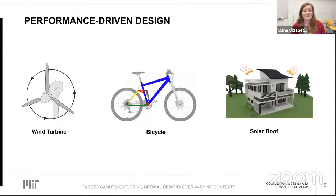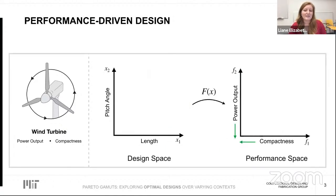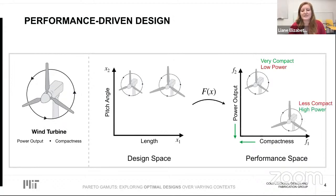Most manufactured objects are designed with a set of high-level functional goals in mind. A wind turbine should be compact with high power output, bicycle components should be lightweight and sturdy, and a solar roof should maximize energy captured throughout the day. These goals typically conflict — a compact turbine design offers low power output, while a different point in design space offers the complete opposite profile. Since both designs offer unique strengths, neither one is strictly better than the other.